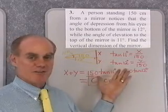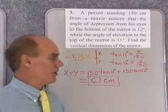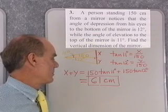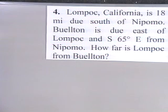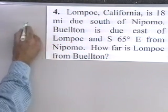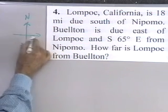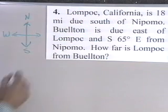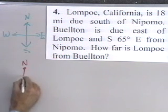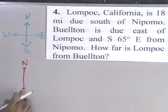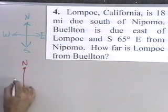So another problem using right triangle trigonometry, setting up right triangles and solving for the missing parts. Problem 4: Lompoc, California is 18 miles due south of Nipomo. Buellton is due east of Lompoc and south 65 degrees east from Nipomo. How far is Lompoc from Buellton? I draw a north-south-east-west coordinate system. Nipomo goes here, and 18 miles due south is Lompoc. Buellton is due east of Lompoc, so I go east — that gives a right angle since south and east are perpendicular.